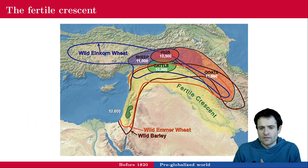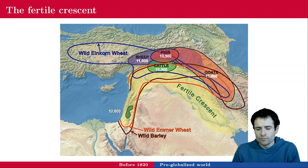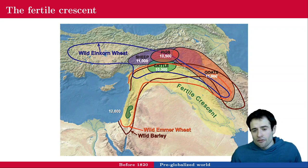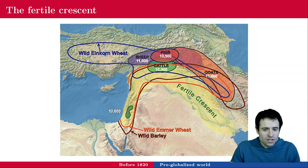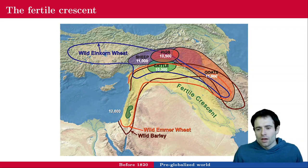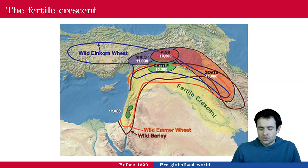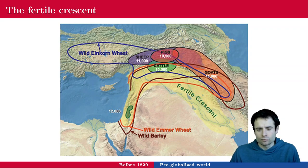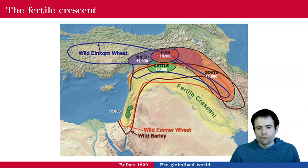One region very much in demand was the fertile crescent — 'crescent' is literally the same as 'croissant' in French. Goats, cattle, sheep, and pigs were domesticated; they could be raised to carry crops and also to be eaten. Barley and corn were grown in this area.